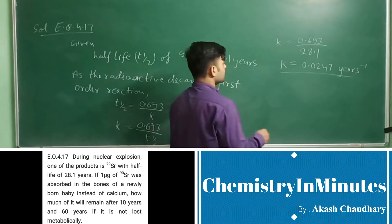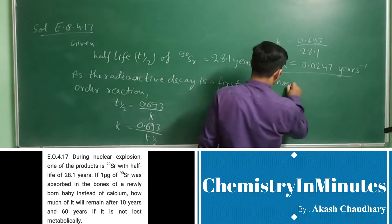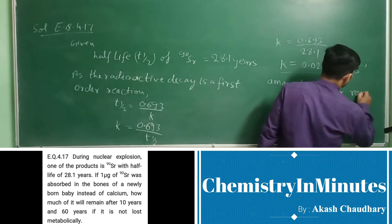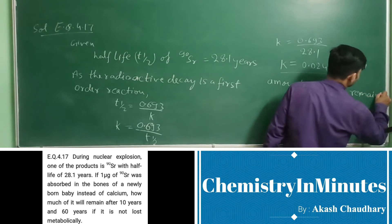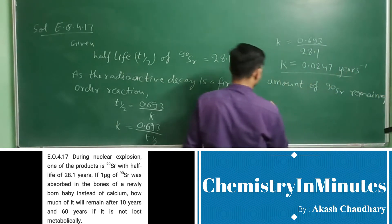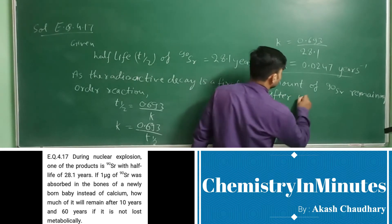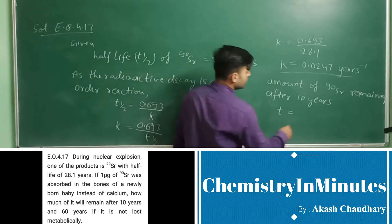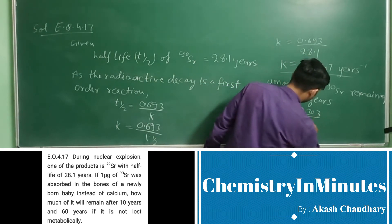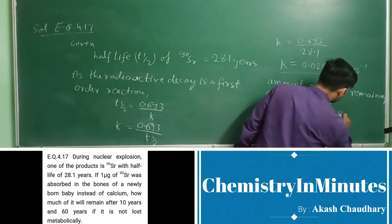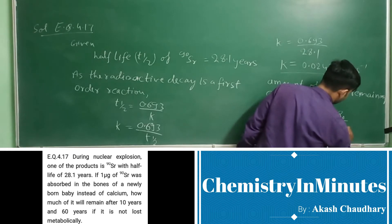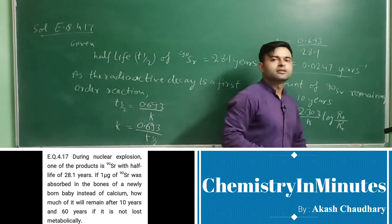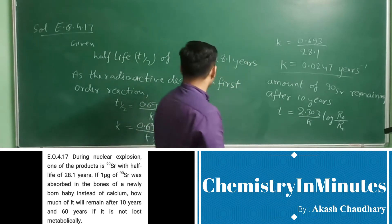Now we will calculate the amount of 90Sr remaining after 10 years. The equation we will use is: T equals 2.303 divided by K, multiplied by log of R₀ divided by Rₜ, where R₀ is the initial concentration and Rₜ is the concentration at time T. Let's put in the values.